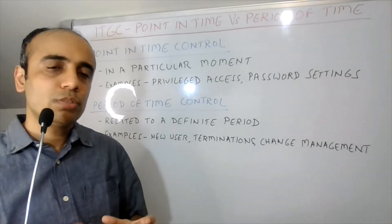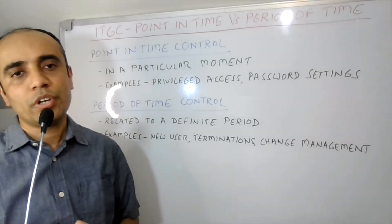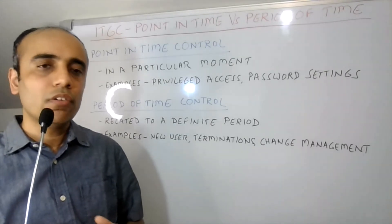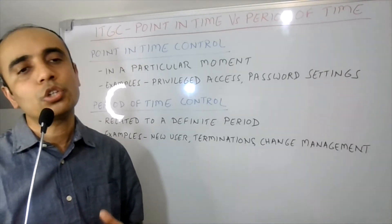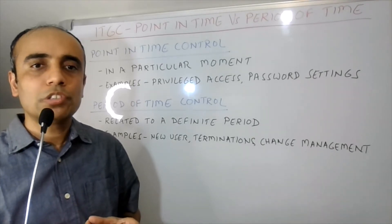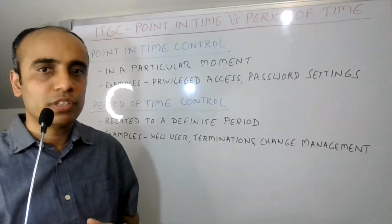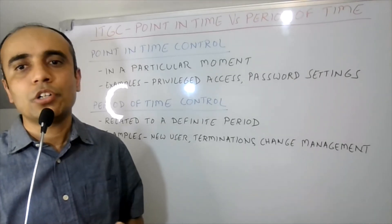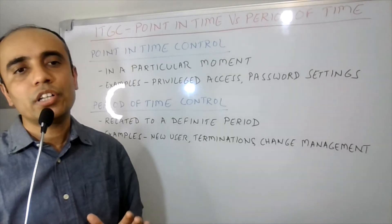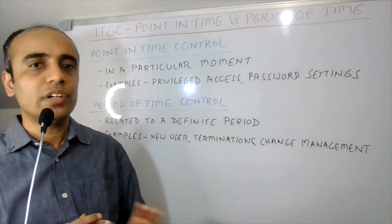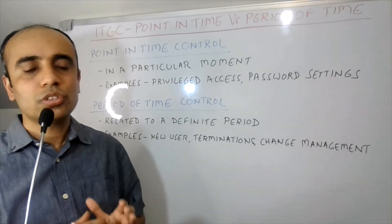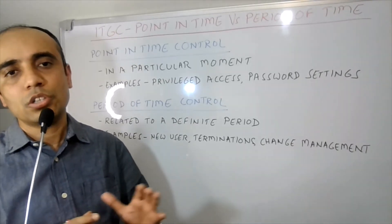Now why is this concept helpful? We need to understand the difference between point in time controls versus period of time controls because it will help you differentiate the level of coverage or assurance a control area can provide. Point in time controls are always a snapshot of time, while period of time controls cover a definite time period. The level of coverage for different controls will differ, which is why this concept is helpful to segregate between these control sets.